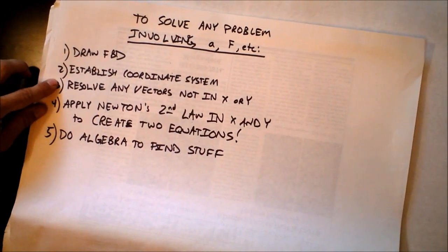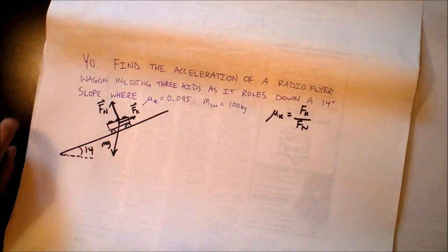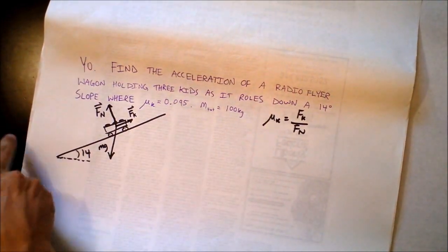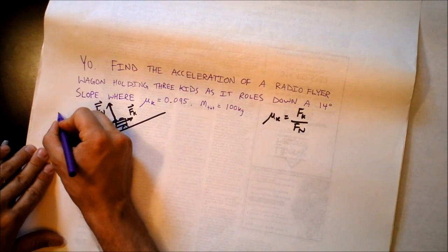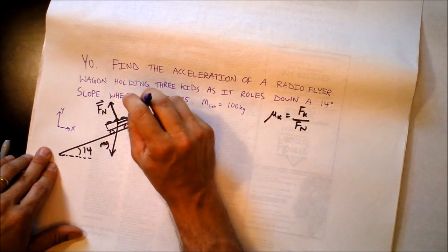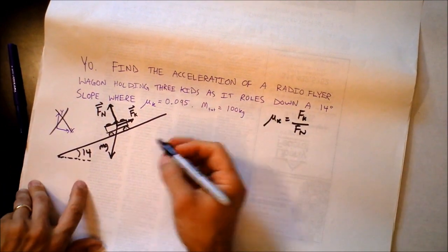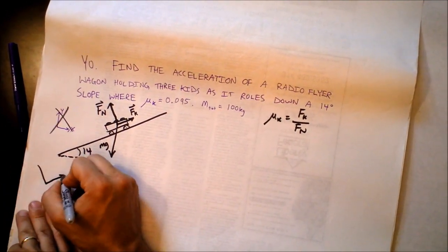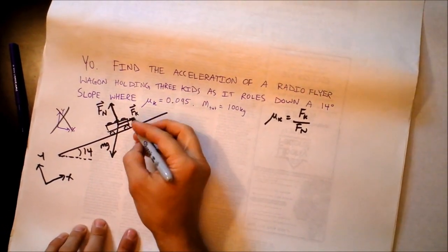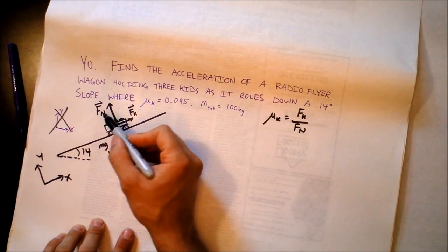And we're now on step three. We need to establish a coordinate system and then resolve any vectors not in x or y. So to do that, I want to point out to you that there are three vectors here. If we establish x and y like this, if we put x and y in the standard orientation, then we will have to resolve f sub k and f sub n. That sounds pretty lousy, so let's not do that. Let's put x and y like this at the angle of the slope.